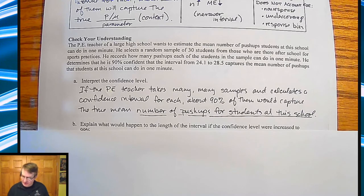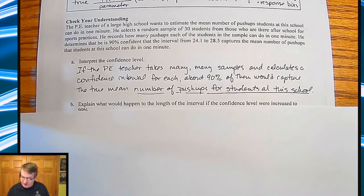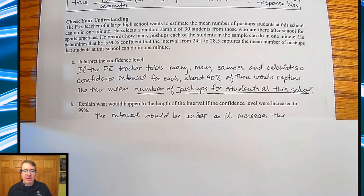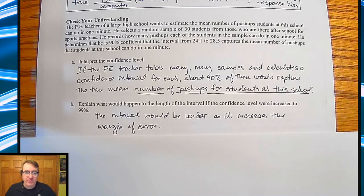So now the question is what would happen to the length of the interval if the confidence level were increased to 99%. If he wants to be more sure of all of his many, many samples to capture the true mean, you would have to go up to 99%. And that would mean that your interval would be wider because it increases the margin of error. So that means you're going to get a wider net.